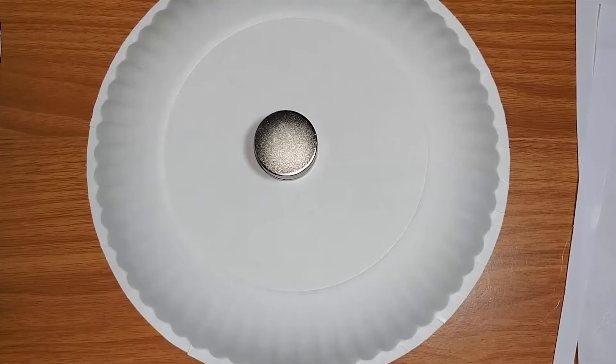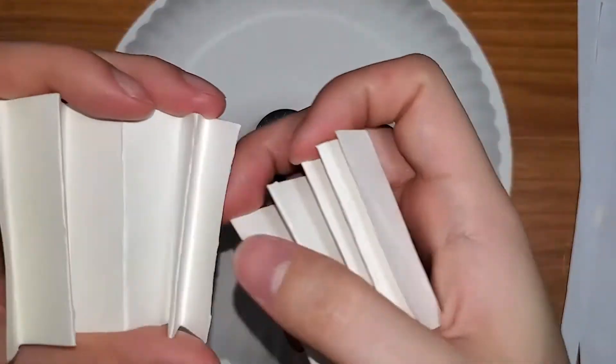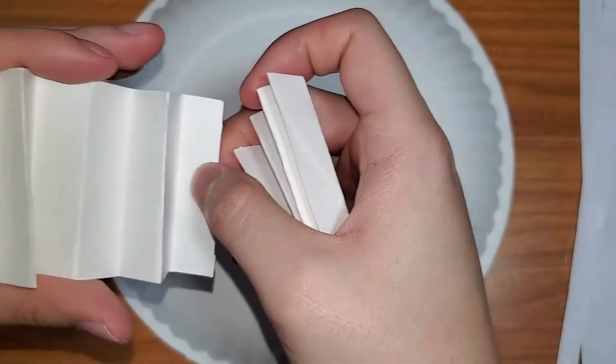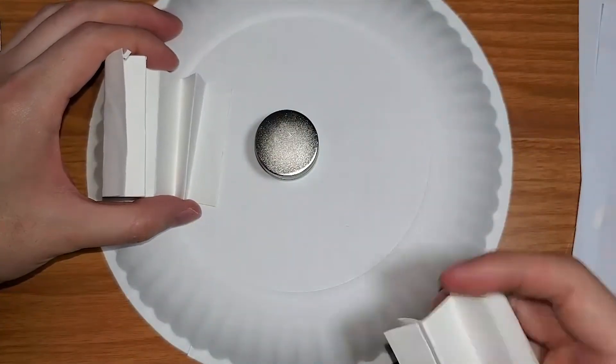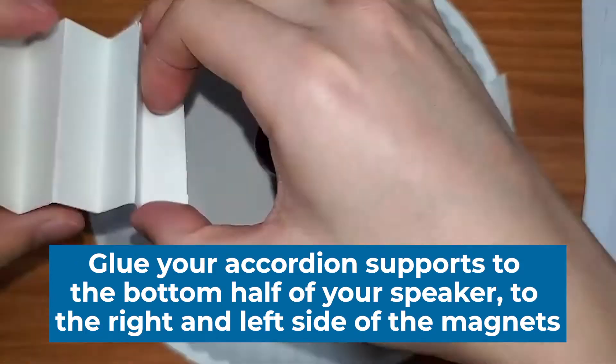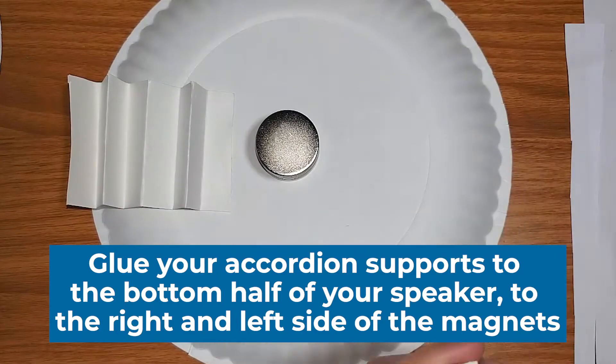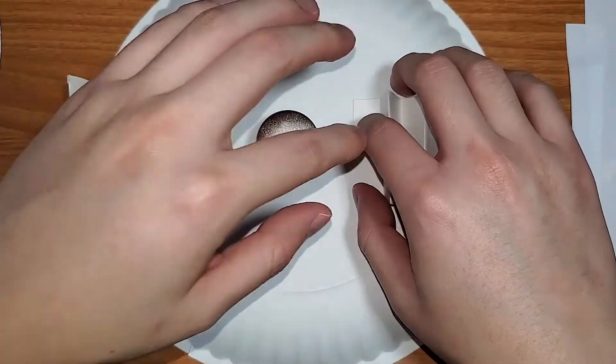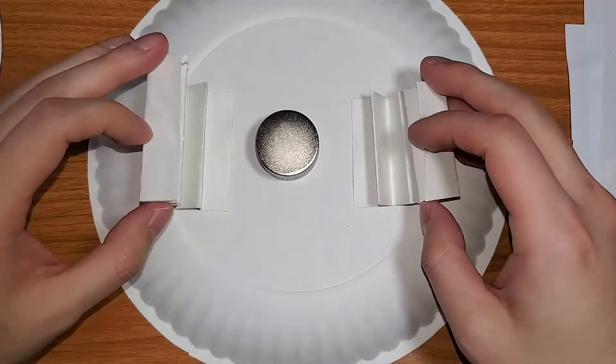With our bottom of the speaker and our support system in hand, what we want to do is glue the bottom of these so the feet come out towards the outside of the plate. With these planted, our next step is to go ahead and let it dry.